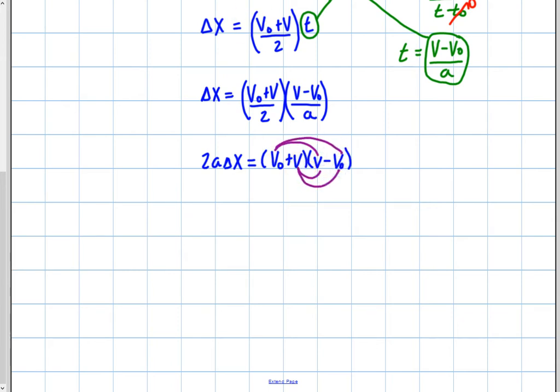here I'm going to get v initial times v final minus v initial squared plus v final squared minus v initial times v final. So, and that's going to equal 2a delta x. So I just kind of emphasize that as a foil to show you how this works here.